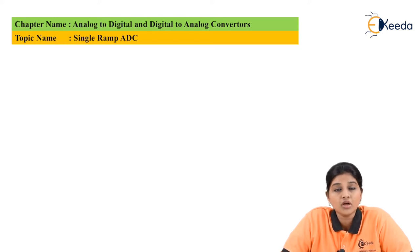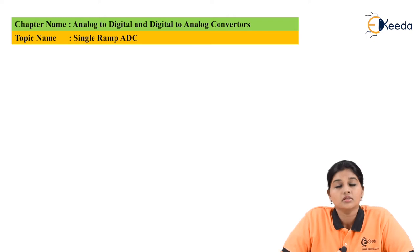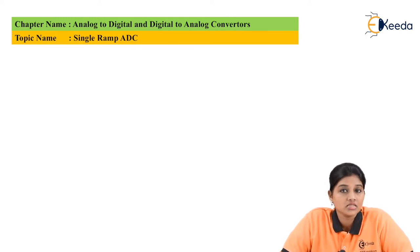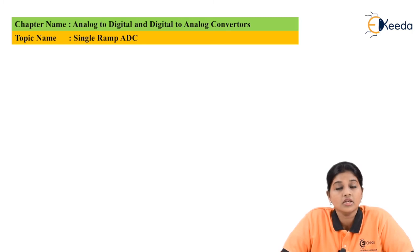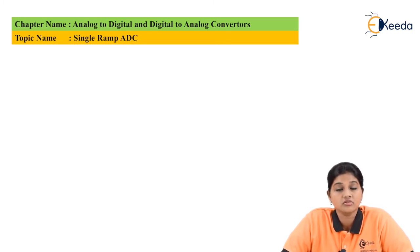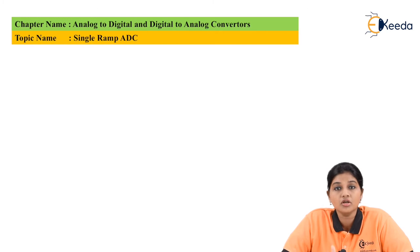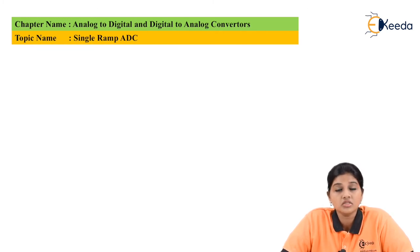Out of these, we are going to see the first type — the single slope ADC. The single slope ADC is also called a single ramp ADC or single slope integrating ADC. It is called a single slope integrating ADC because the reference voltage or reference signal is converted into an integration at the output during the conversion time. This type of ADC is basically used for producing a ramp voltage.